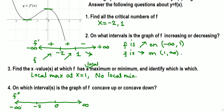We test the sign of the second derivative on three intervals. From negative infinity through negative 2, the first derivative is decreasing, which means the second derivative is negative. From negative 2 to 0, the first derivative is increasing, so the second derivative is positive. From 0 through positive infinity, the first derivative is decreasing, so the second derivative is negative. The pattern is: negative, positive, negative.